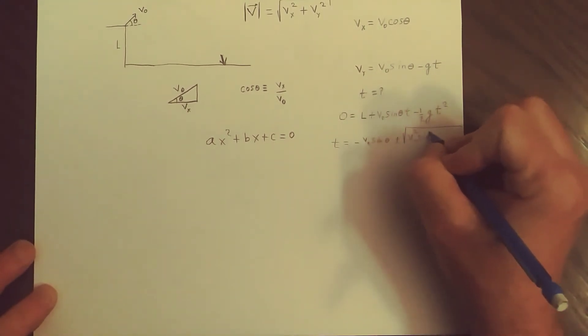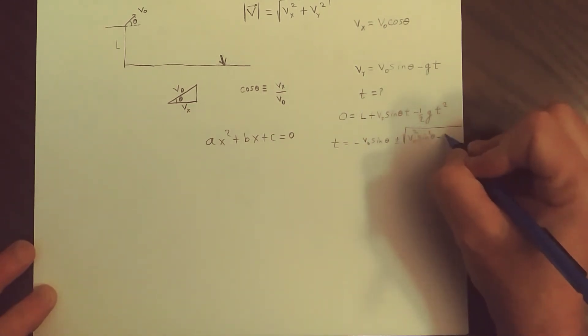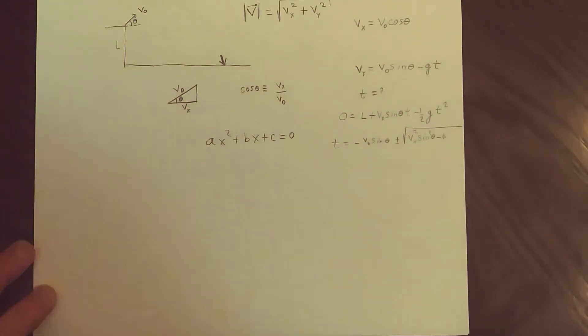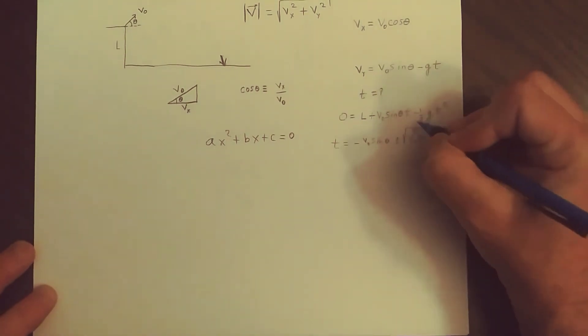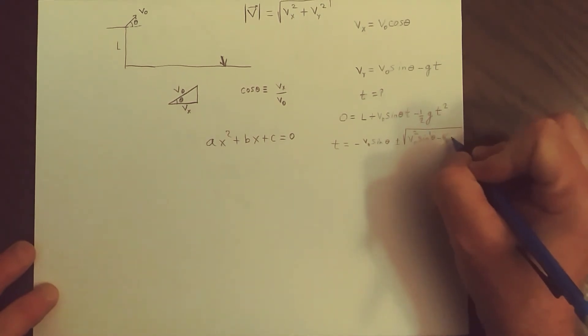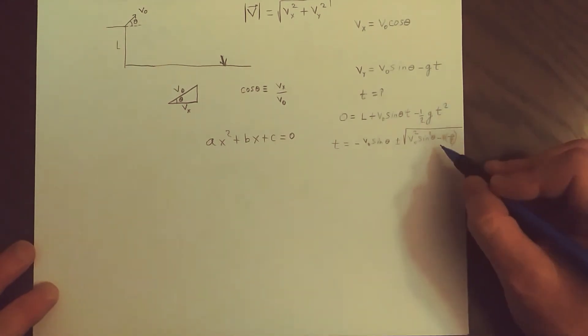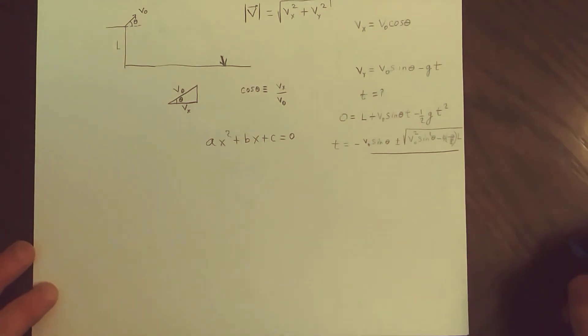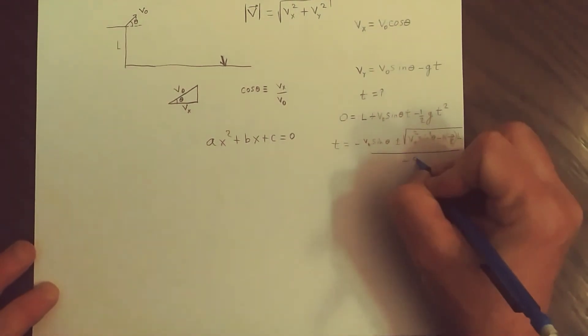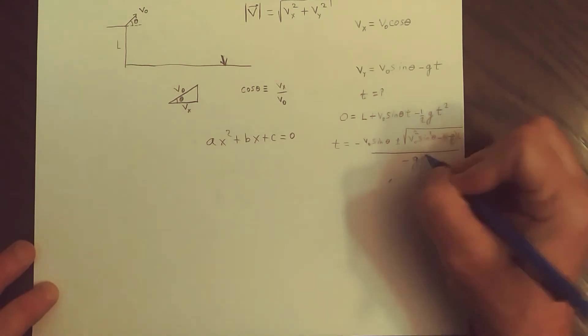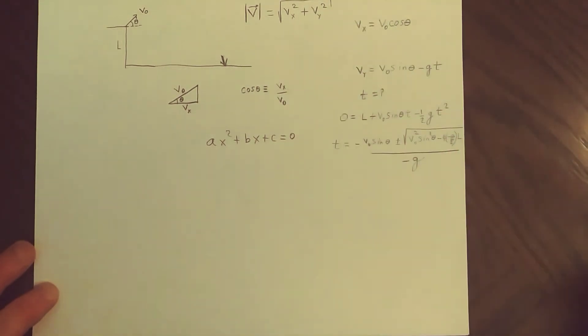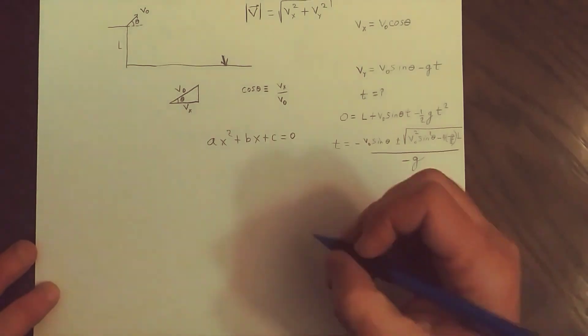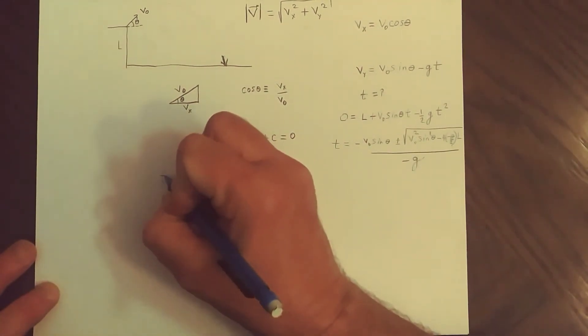Plus or minus the square root of B squared, so V naught squared sine squared theta minus 4 times A times C. And A is this term, so we get a minus G over 2, so that's minus 4 times A times C. C is L. We have to divide all of that by 2A which is minus G. Sorry I keep breaking my tip.